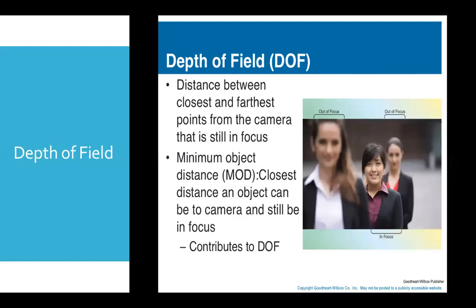Now let's talk about depth of field. In this image there are three persons — one in the foreground, one in the background, and one in the middle. The camera is focusing on the person in the middle. Depth of field is the distance between the closest and farthest points from where the camera is focusing.